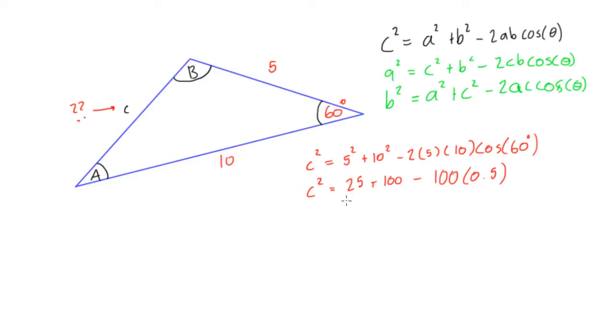So now what we want to do, we have 125 minus 50, so we can just write that, so c squared is equal to 125 minus 50, and c squared is then equal to 75, and last step is we take the square root of this, so we get c is equal to about 8.66.